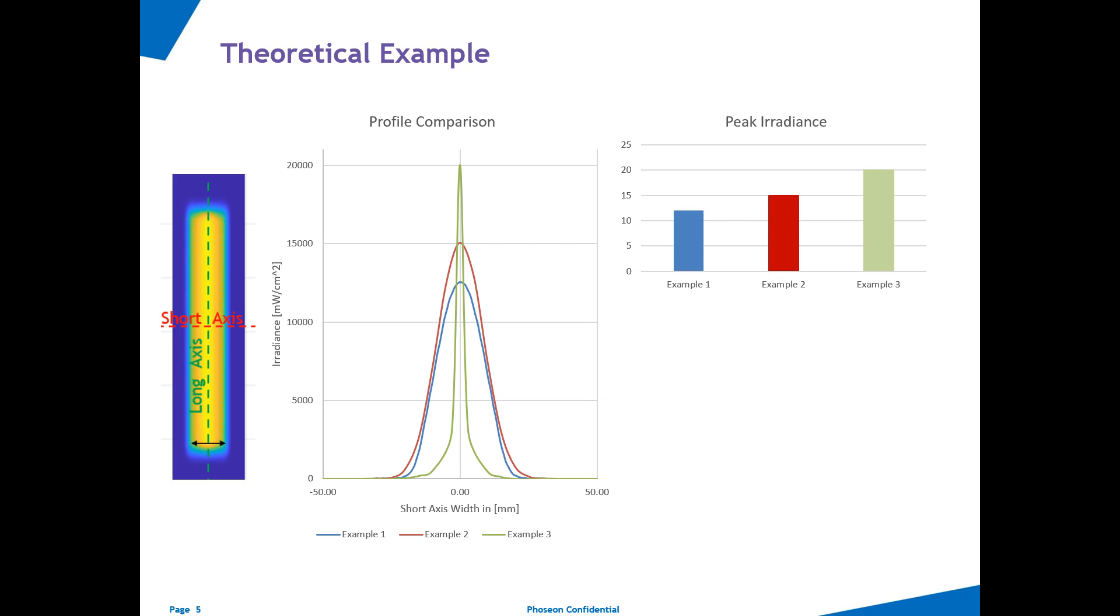So when we rank these lamps by dose, suddenly example two is the clear winner, while example three has significantly less dose since the short axis profile is much narrower. The key takeaway here is that high peak irradiance does in no way guarantee the highest dose. Without knowing the short axis profile and the width of the lamp output, a dose estimate is in fact very difficult.